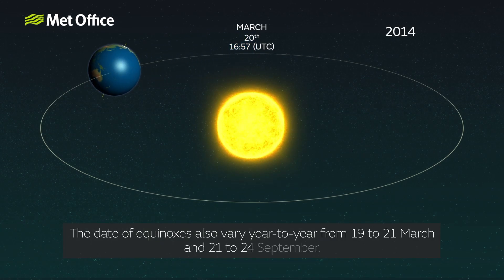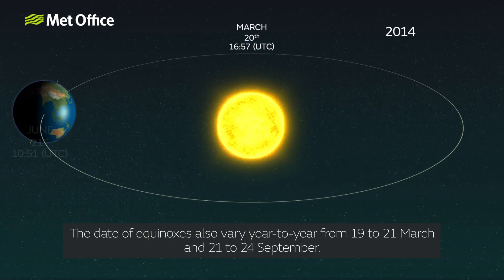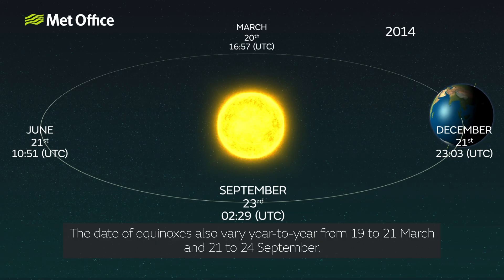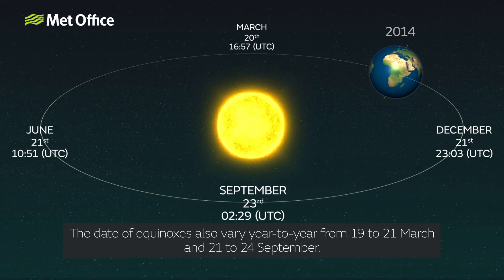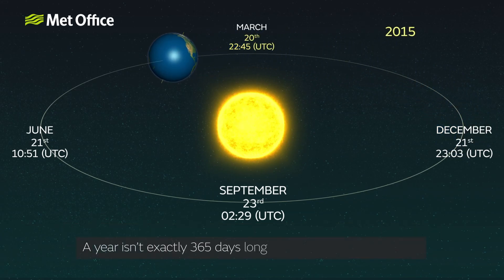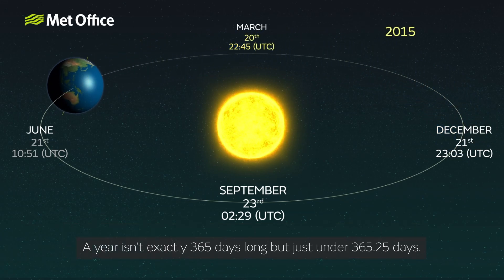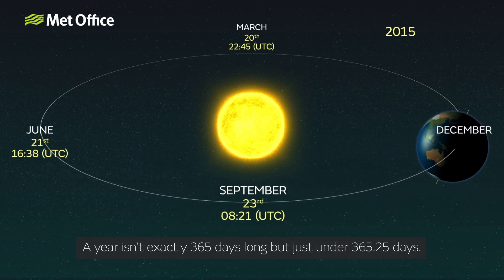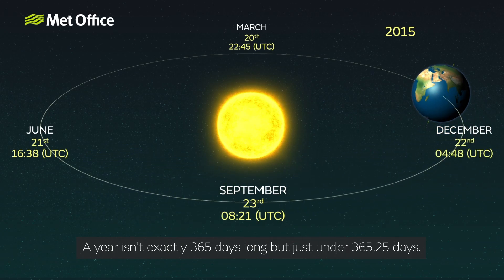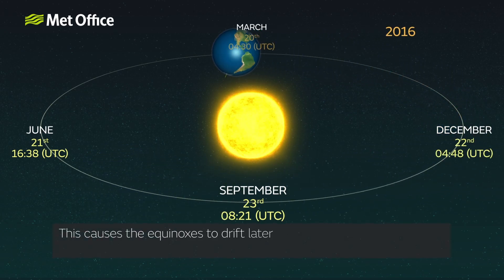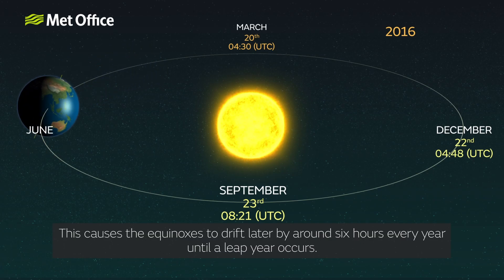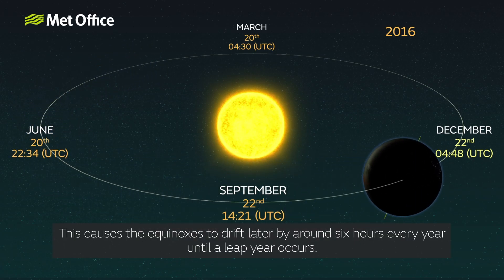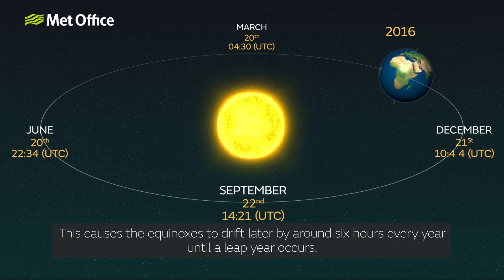The dates of equinoxes also vary year to year, from the 19th to 21st of March and the 21st to 24th of September. A year isn't exactly 365 days long, but just under 365.25 days. This causes the equinoxes to drift later by around six hours every year, until a leap year occurs.